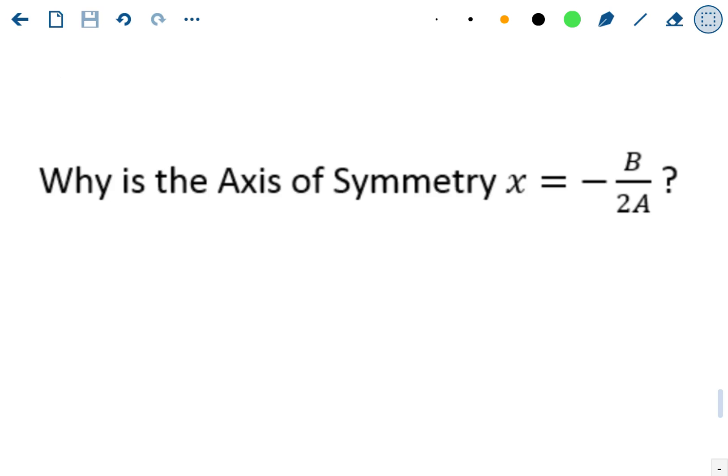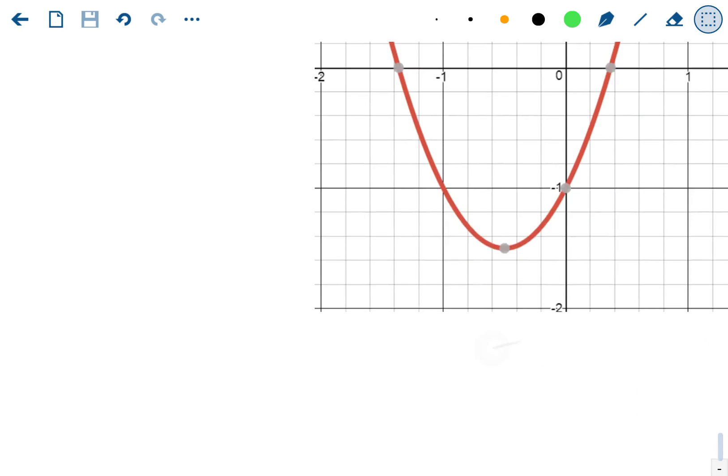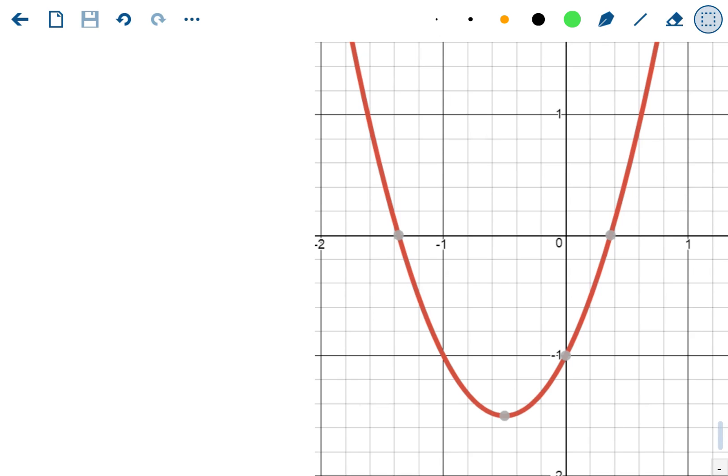This video focuses on why the axis of symmetry of a quadratic function is x equals negative b over 2a. This is a formula to define the axis of symmetry for any quadratic function, but why is it those letters? Why negative b over 2a? A lot of times teachers just explain that's the formula and you have to use it every time, but it does come from something. Before we talk about that, let's understand what the axis of symmetry is. This is just a typical quadratic graph.